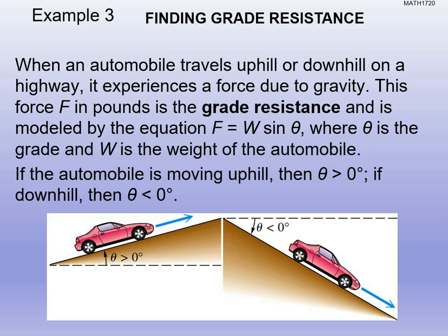Here's a real-life physics application. When an automobile travels uphill or downhill on a highway, it experiences a force due to gravity. This force F in pounds — the grade resistance — is modeled by the equation F equals W sine theta, where theta is the grade and W is the weight of the vehicle. Theta greater than zero means uphill; theta less than zero means downhill.